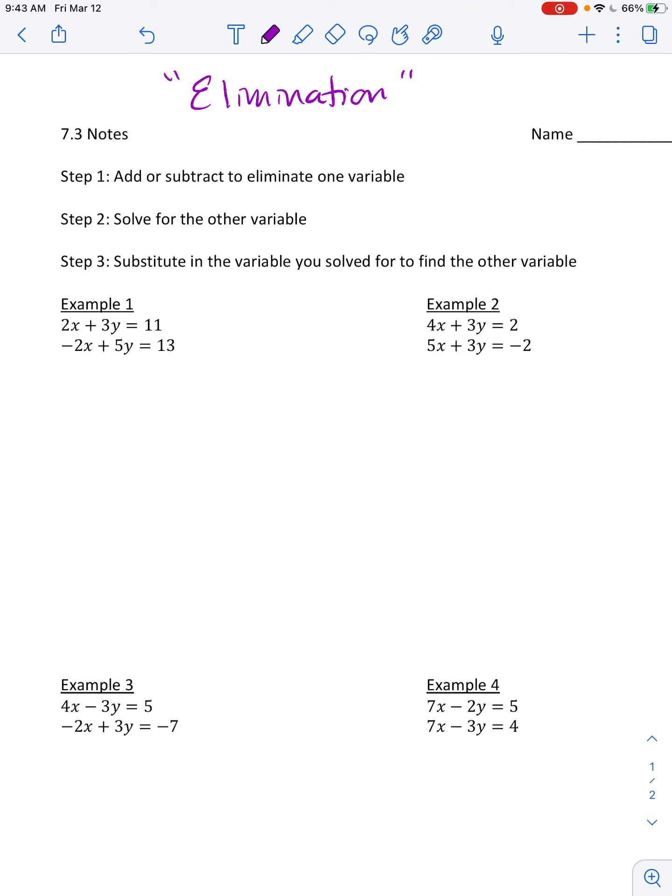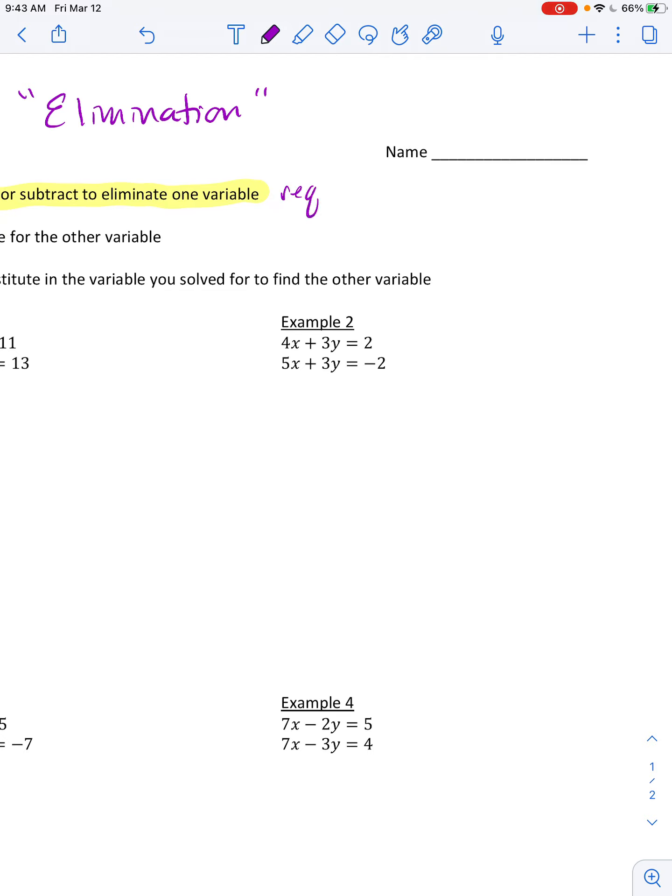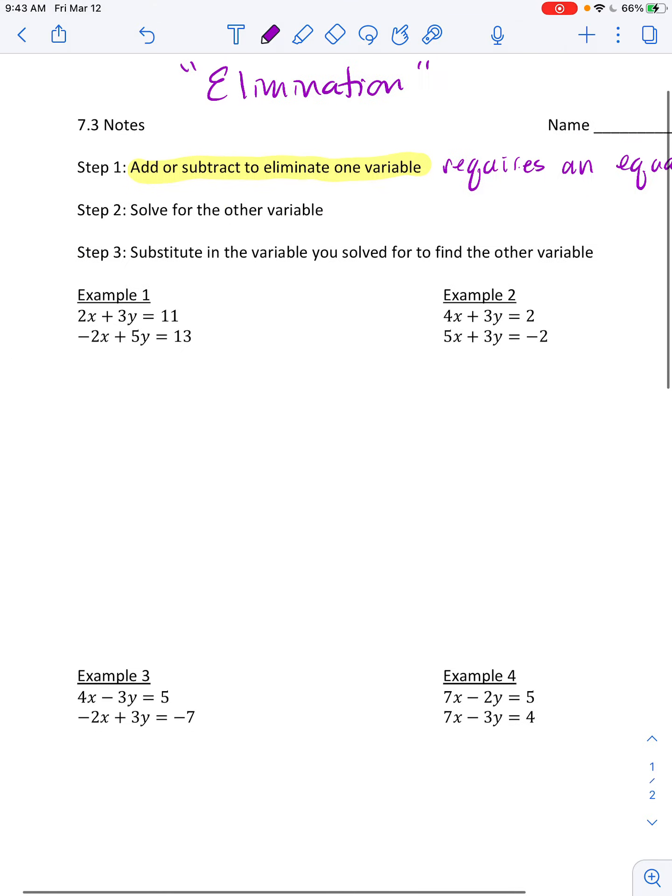So there's a couple steps. First of all, we are going to add or subtract to eliminate a variable. That's going to basically mean that we are going to be required to have an equal but opposite pair in order for them to cancel out or eliminate. So that would mean like maybe you're going to have a 2x and a negative 2x or a negative 5y and a positive 5y. So those will cancel out.